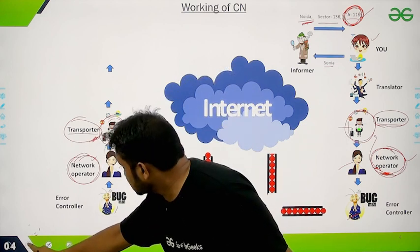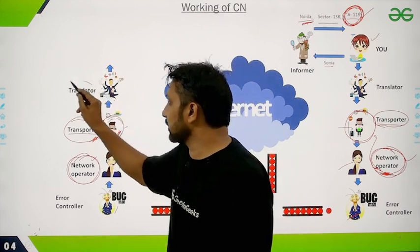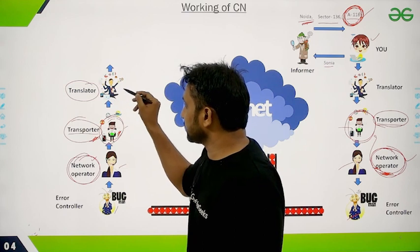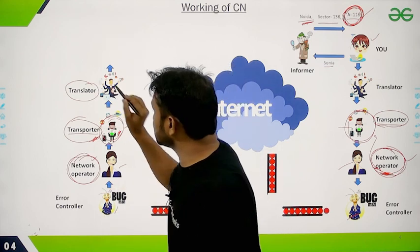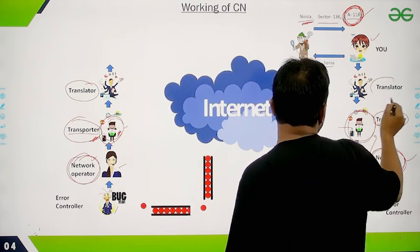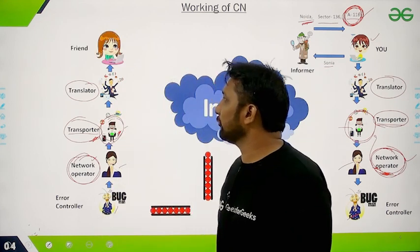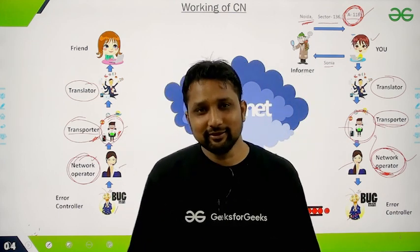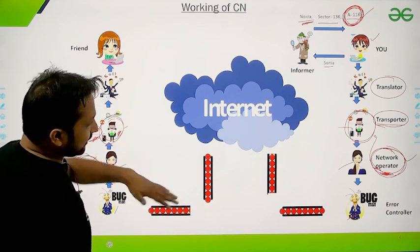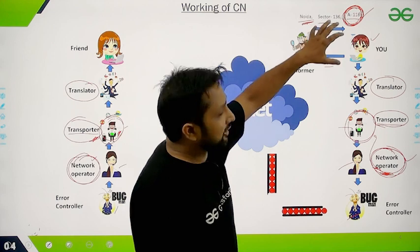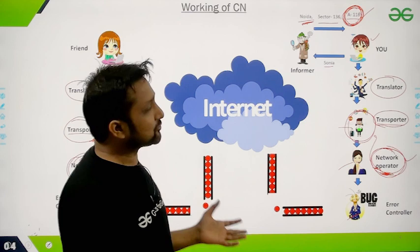Before the Transporter delivers the letter, it is given to the Translator on the receiving side, who translates it as per the receiver's language. Finally, your friend receives the letter. If she wants to reply, she follows the same process in reverse. This is actually how the internet works.